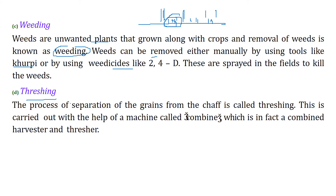Threshing: we are interested in grains because we eat grains. The separation of grain from the chaff is called threshing. This can be done using a harvester or thresher. Today we have machines that can work on the crop and get the grains at the same time.